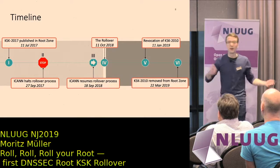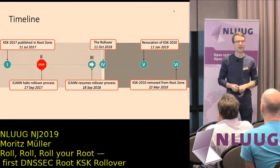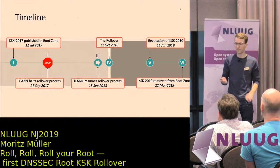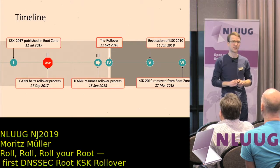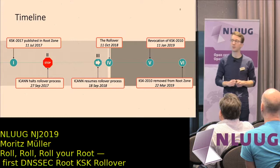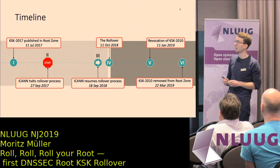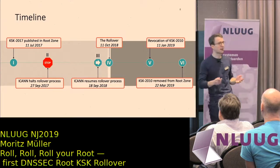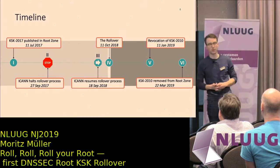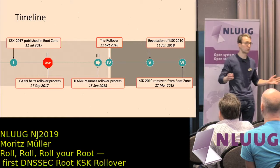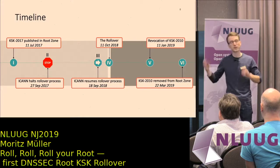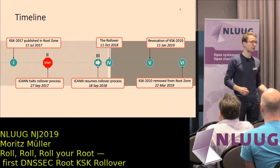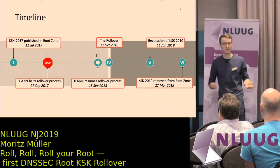About 90% of resolvers now have the new key — but 90% is maybe not good enough, because 8% of resolvers do not trust KSK 2017. At this point we didn't really know why, or whether we should worry. This worried the community and ICANN enough that they put the rollover process on hold for an undefined period of time to figure out why so many resolvers were not trusting the new key.